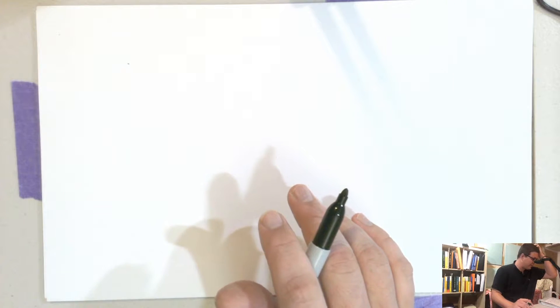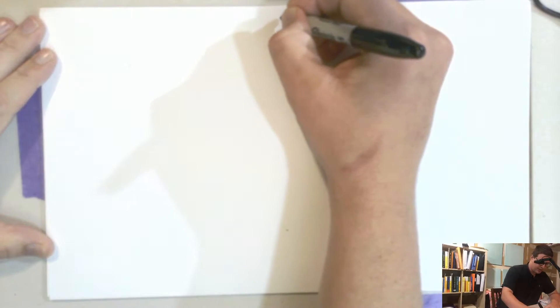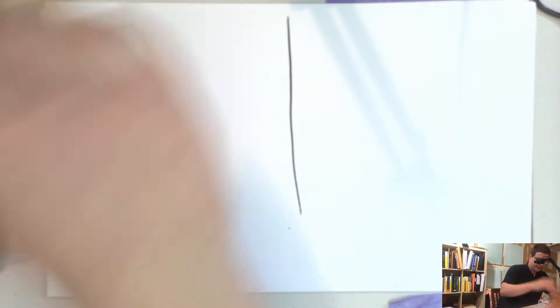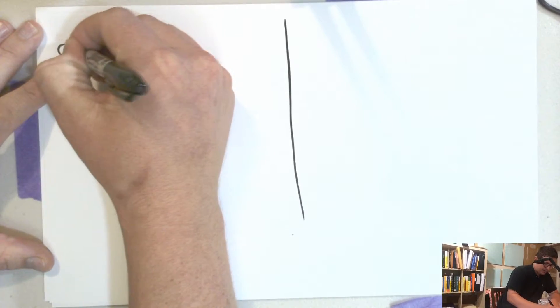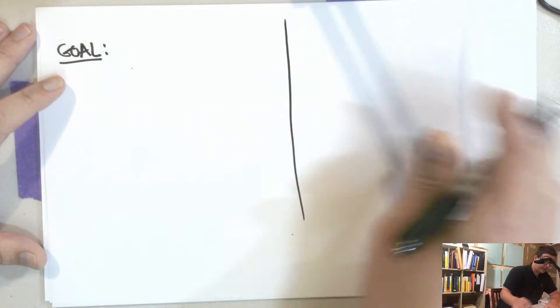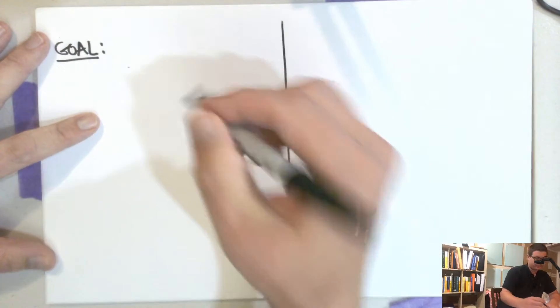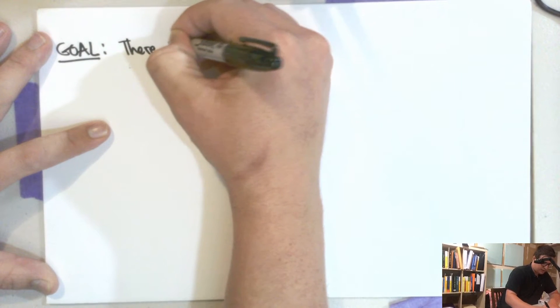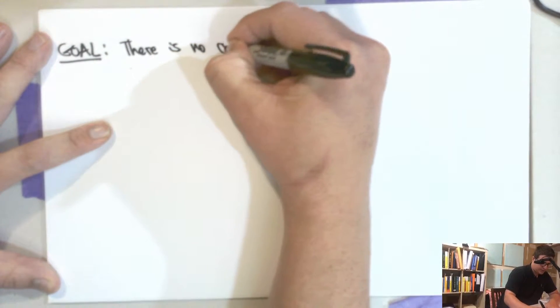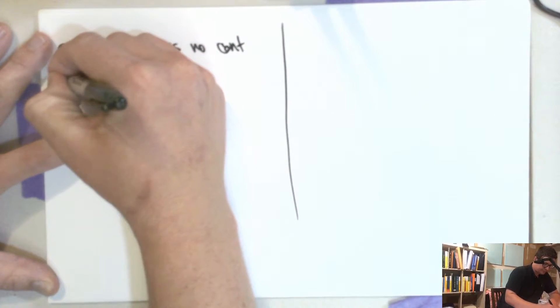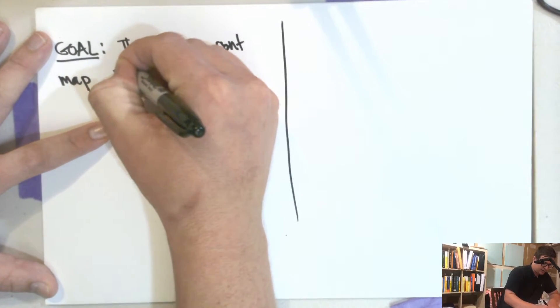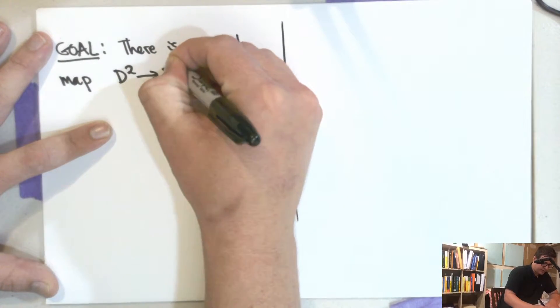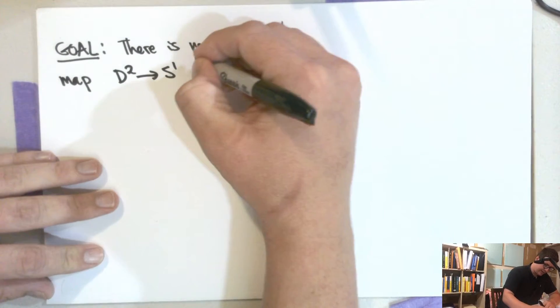I'm going to do that in another video, but first let me tell you what I want to do. So here I want to prove that the goal here is that there's no continuous map from D² to S¹ that fixes the boundary.